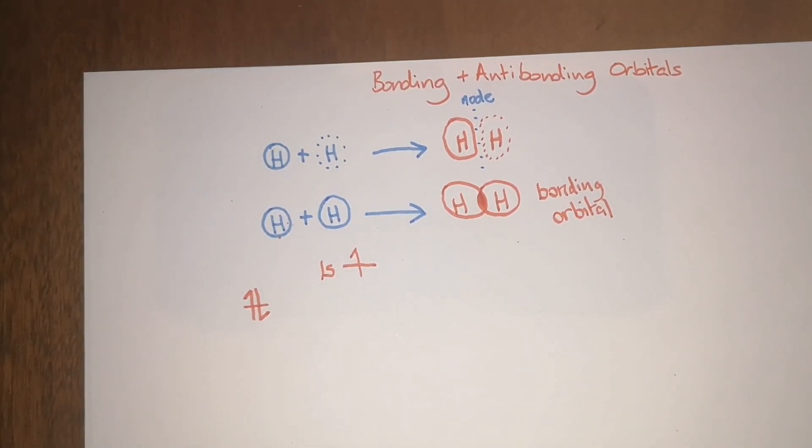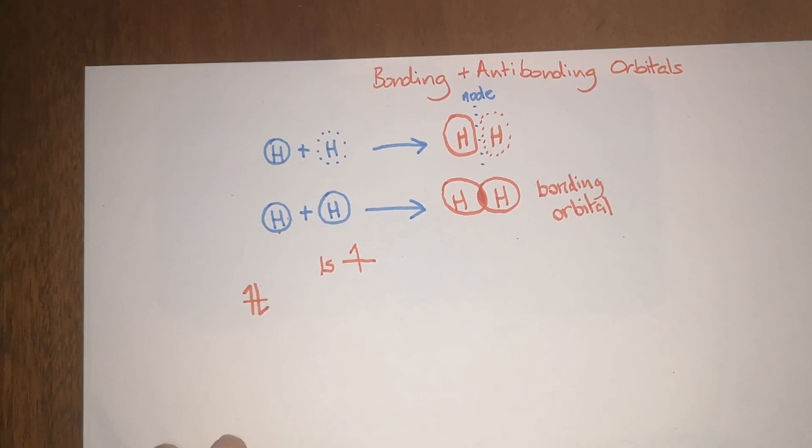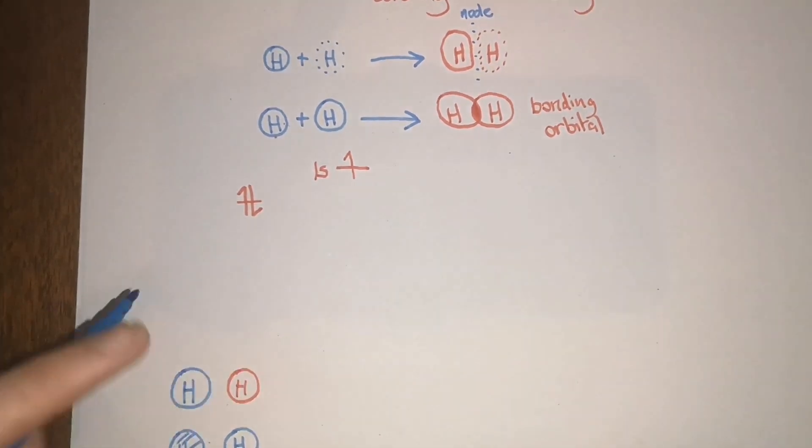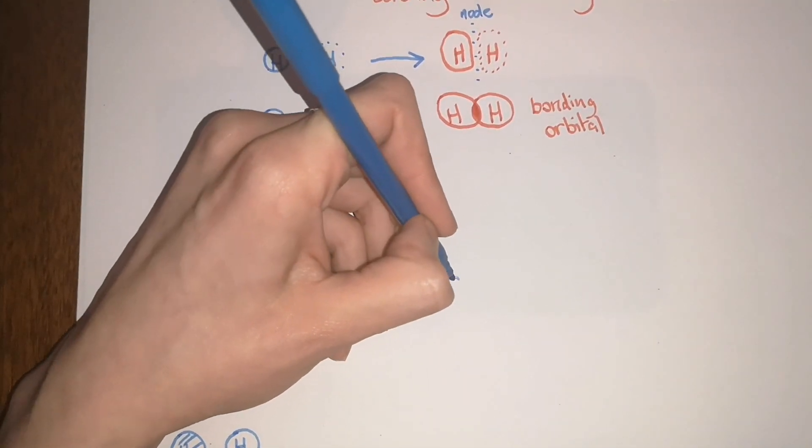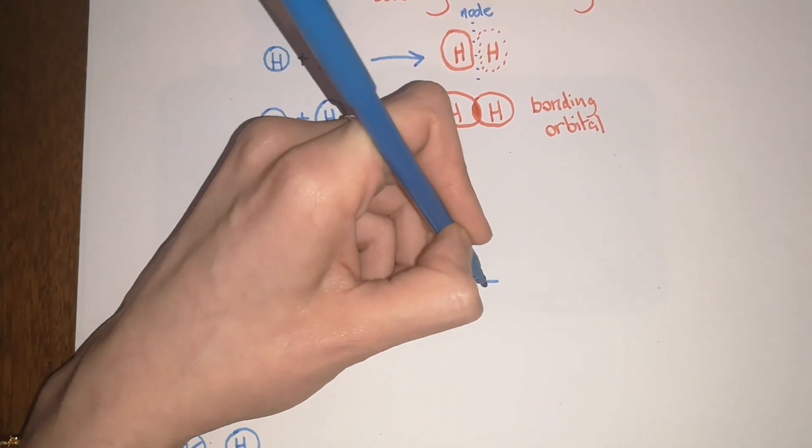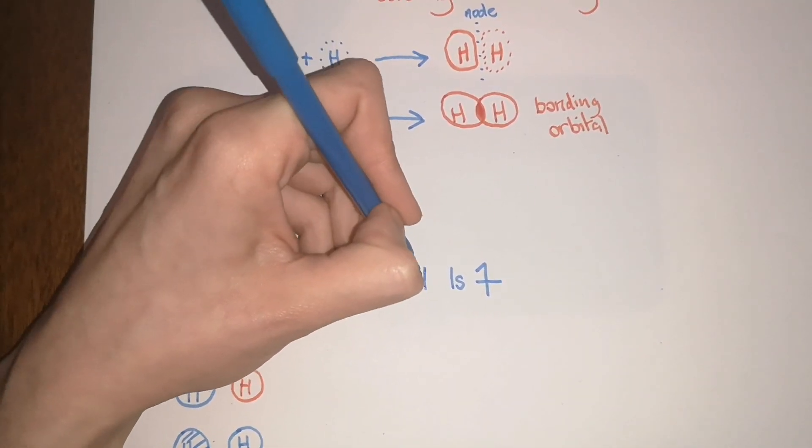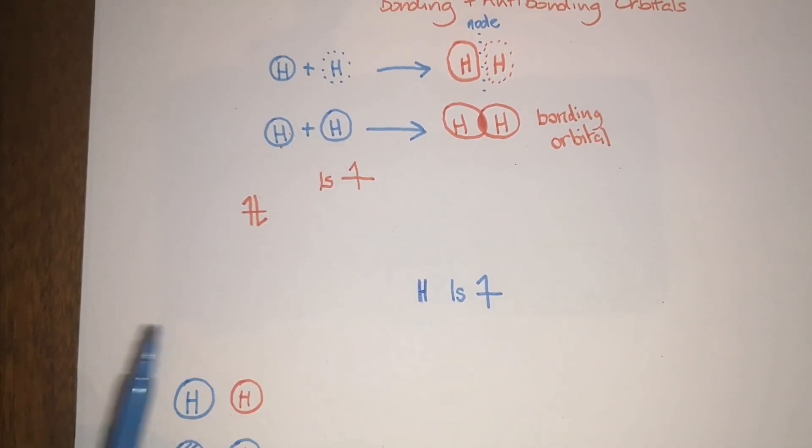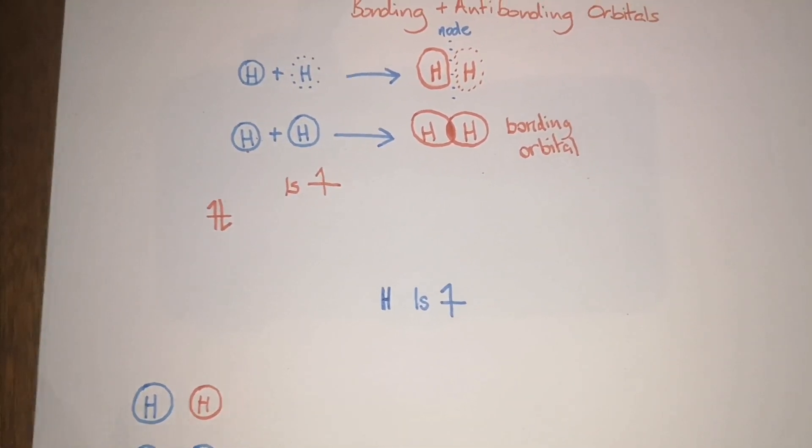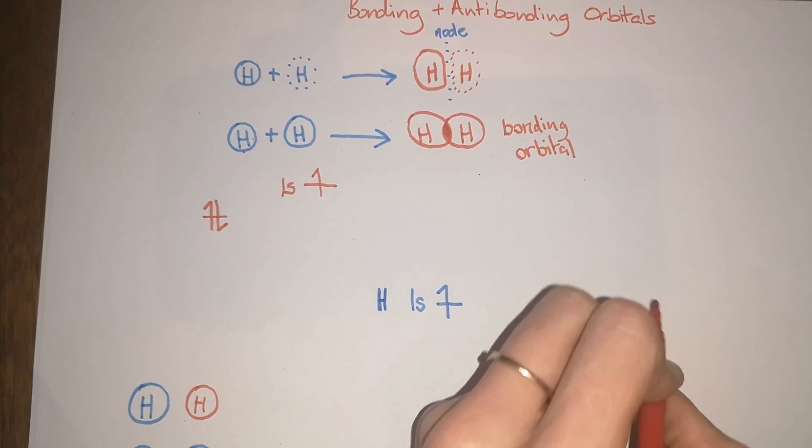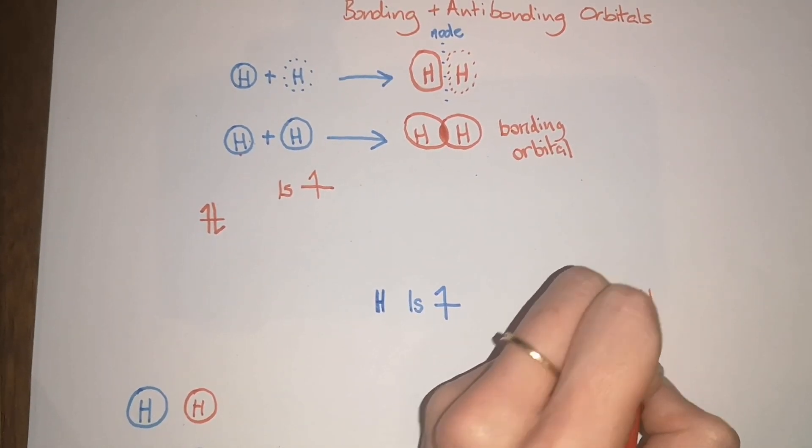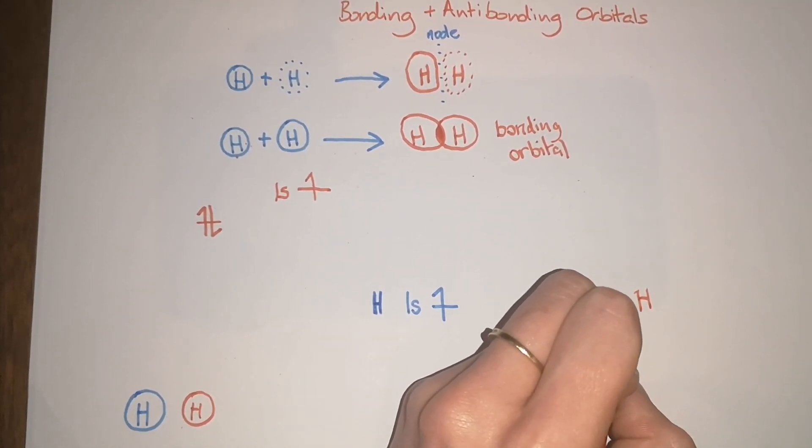What does this look like in terms of an energy diagram? If you have one proton on the left—or sorry, hydrogen—the terms hydrogen and proton are often interchanged when it only has a single electron.